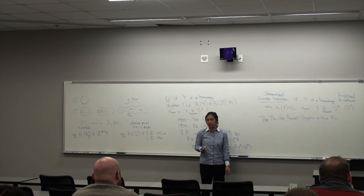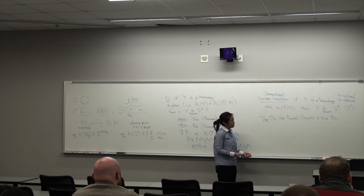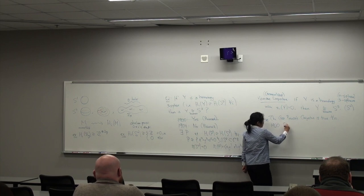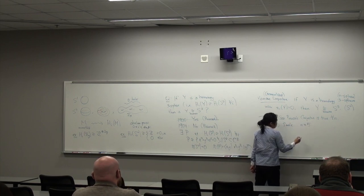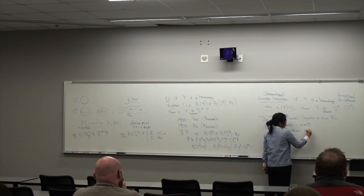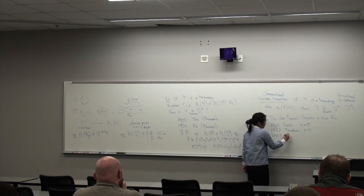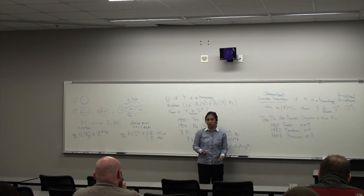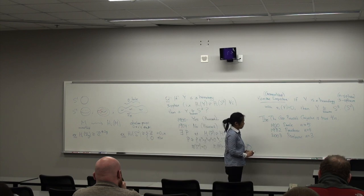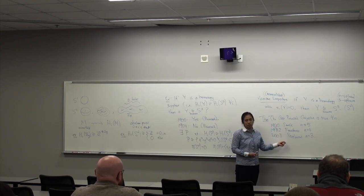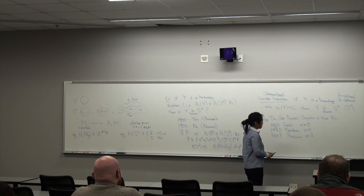It took nearly a century and three Fields Medals to solve. The theorem is that it's true in every dimension n. Dimensions 1 and 2 are trivial. The high-dimensional cases were solved first — by Smale in 1960 for n ≥ 5. In 1982, Freedman solved the n=4 case, and in 2003, Perelman solved the n=3 case, the original Poincaré Conjecture. This is a general phenomenon in topology where higher-dimensional problems can sometimes be easier than the 3- and 4-dimensional cases.